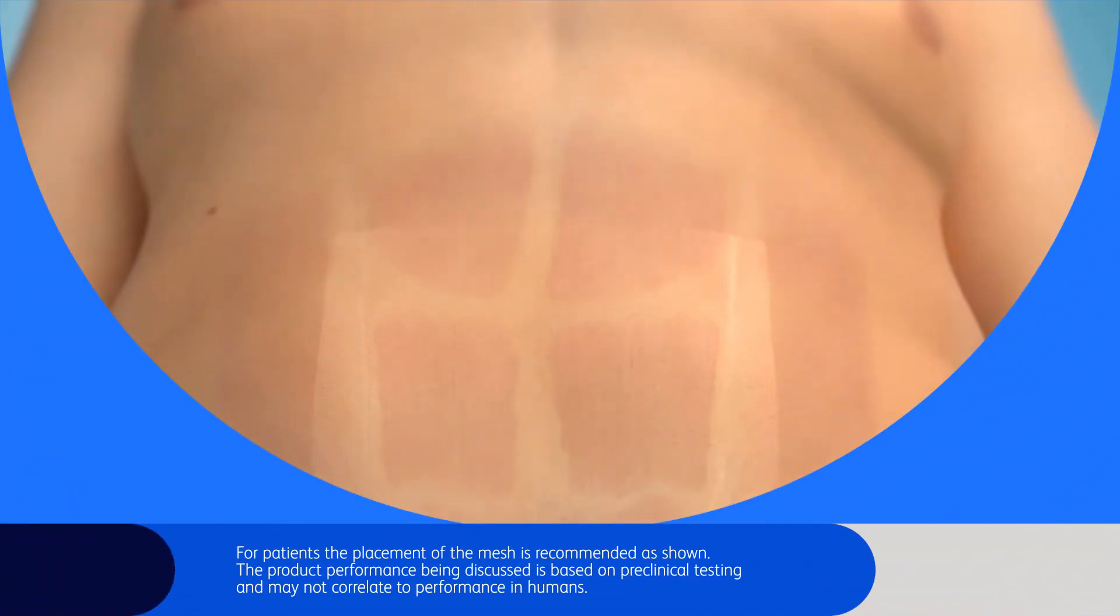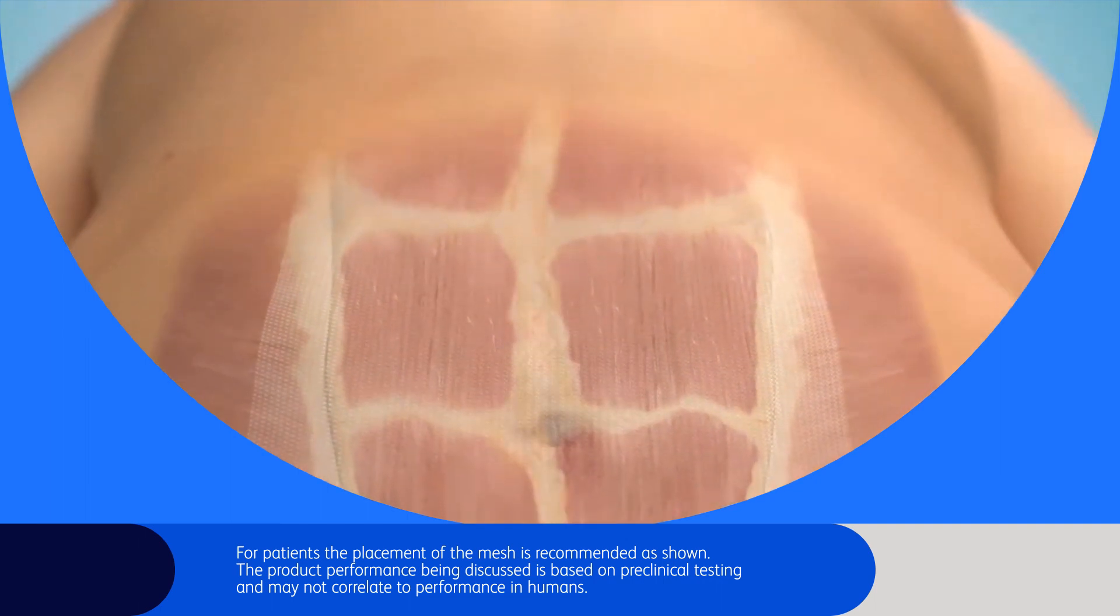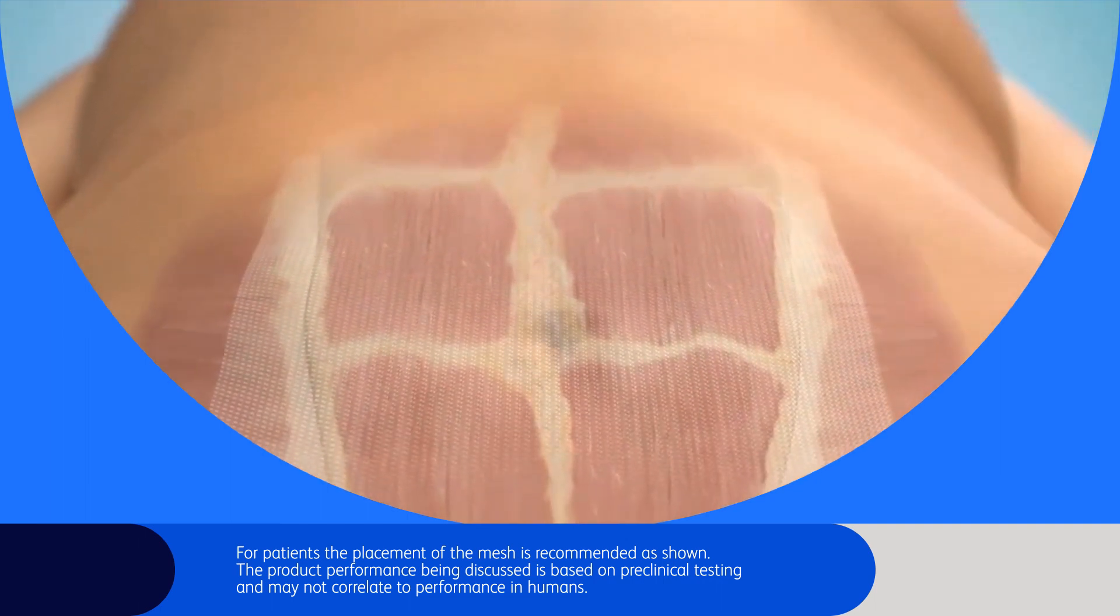Since Phasix is broken down primarily through hydrolysis, enzymes such as collagenase will have less of an impact on the resorption profile of the scaffold.